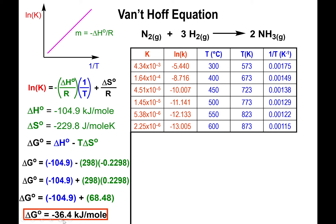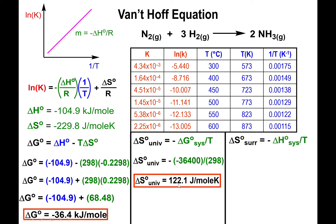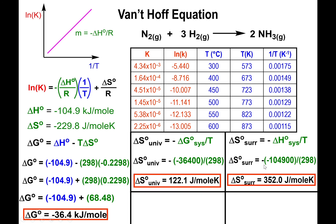The entropy of the universe equals negative ΔG(system) over temperature: converting to joules per mole and dividing by temperature in Kelvin gives ΔS(universe). The entropy of the surroundings equals negative ΔH(system) over temperature: negative 104.9 kJ/mol converted to J/mol and divided by T gives a positive ΔS(surroundings) = +352 J/mol·K. ΔS(system) = negative 229.8 plus ΔS(surroundings) = +352 sums to 122.1 J/mol·K, confirming the process is spontaneous.